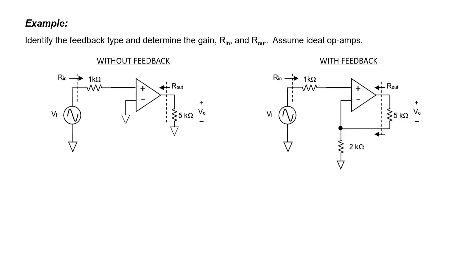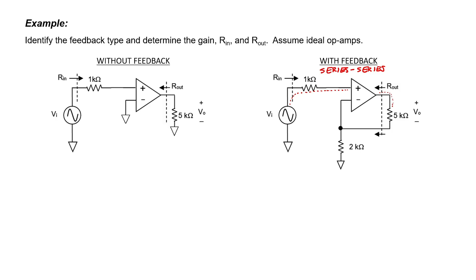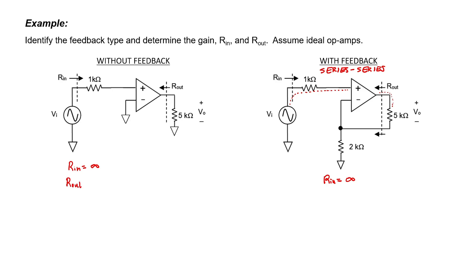Let's look at another example. If I were an ant crawling on this wire, I would be able to walk all the way to the edge of the amplifier without crossing the feedback network on both the input and output sides. Therefore, I can identify this feedback as series-series. I expect both the input and output impedance to increase with series-series feedback according to the chart. The input impedance without feedback is infinity, and with feedback it is also infinite because we've assumed ideal op-amps. The original output impedance of the amplifier is zero, and with series-series feedback it has increased to 2 kilo-ohms.